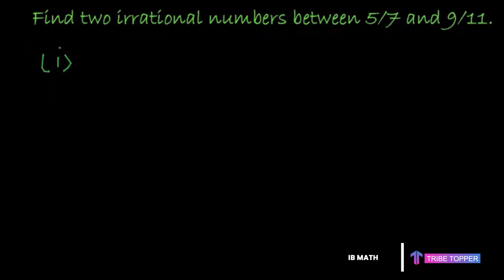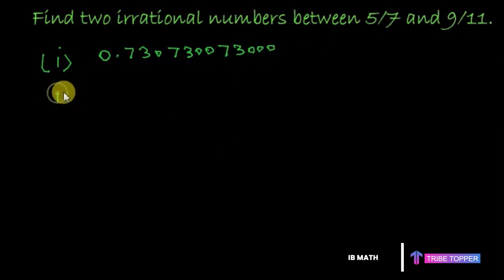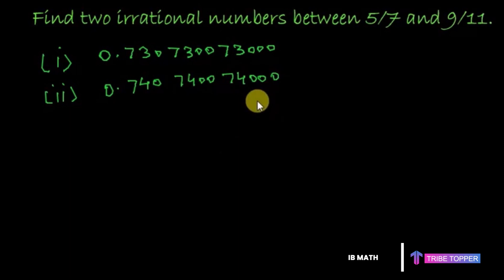As we saw in the previous question, we can use any non-terminating and non-repeating decimals. For example: zero point seven three zero zero zero zero seven three zero zero zero and so on — this is one irrational number. Another irrational number could be zero point seven four zero seven four double-zero seven four triple-zero and so on. In this manner you can get any number of irrational numbers between five by seven and nine by eleven.